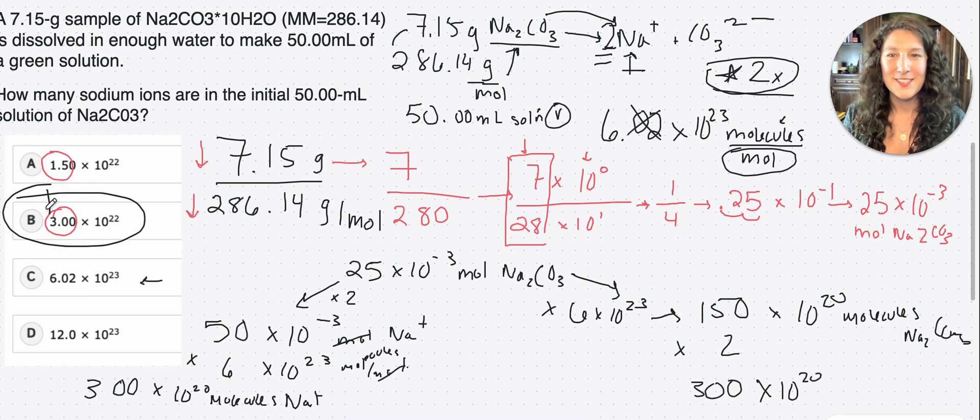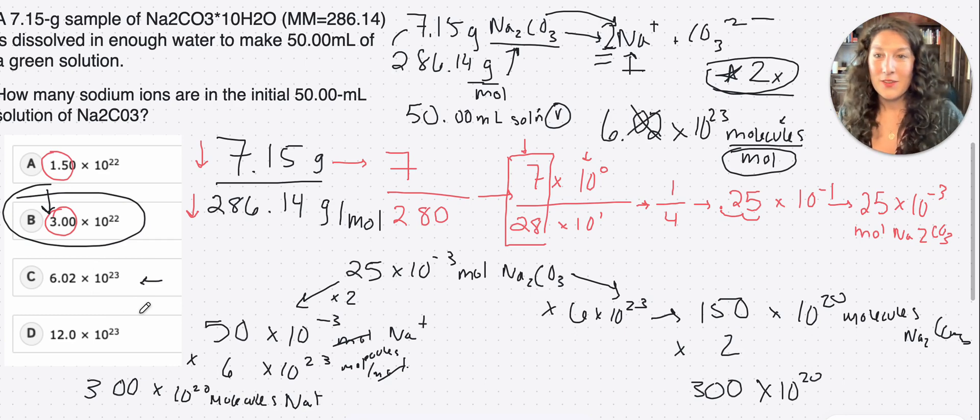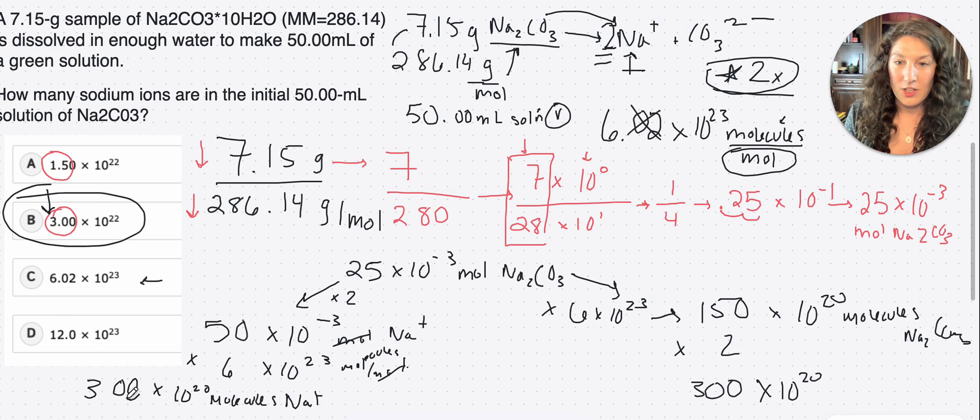So again, once you get down to something where like, okay, I've got the value that I'm looking for, just check and see if there's an answer that it has to be given the numbers you're provided, right? So again, we can very easily get there without having to actually go ahead and convert our exponents into 3 times 10 to the 22, right? You can always do it to double check at the end. Now notice, A, tempting answer if you didn't do the molar ratio.